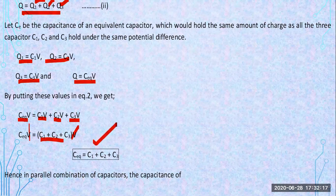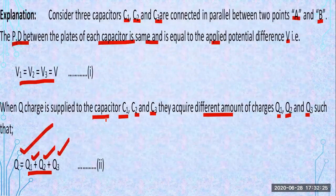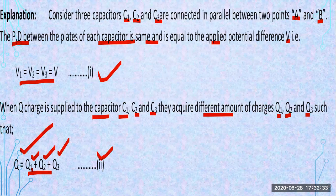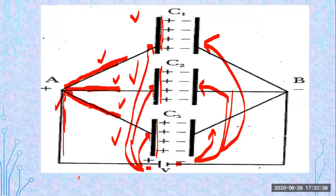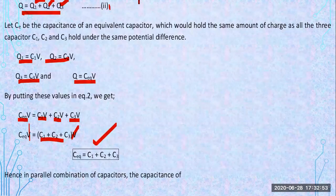This is the case for three capacitors connected in parallel combination. Looking back at this concept: the potential across each plate is the same, so the charges across the plates will be different. You added all the charges together to find the total. This diagram shows how charges differ and potential remains the same because they are connected to the same terminal.